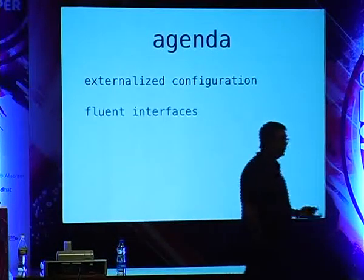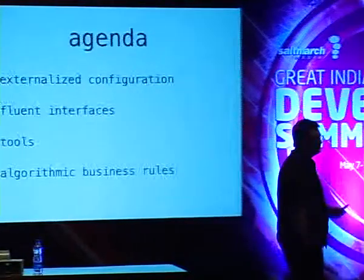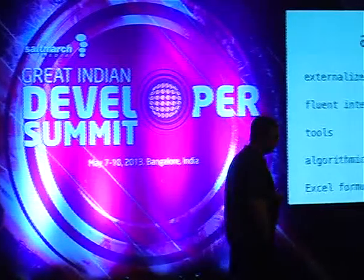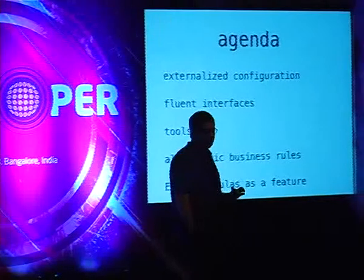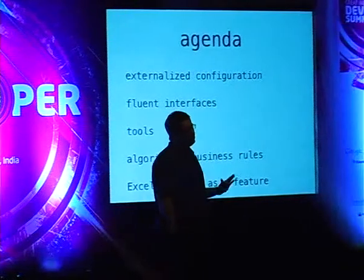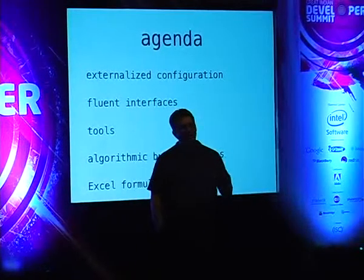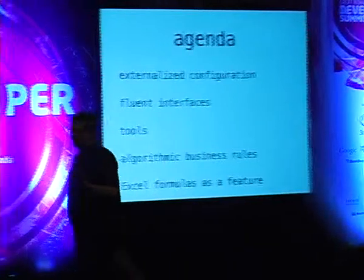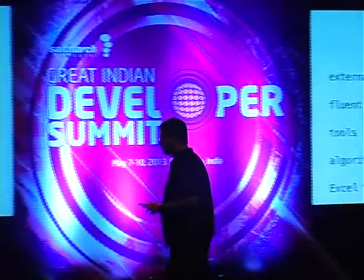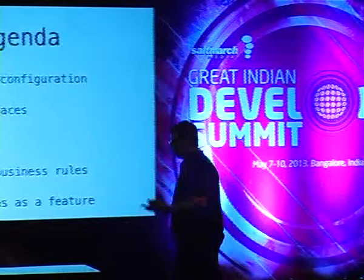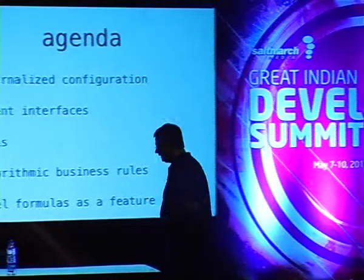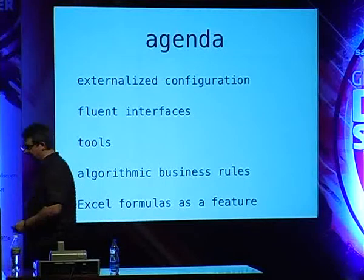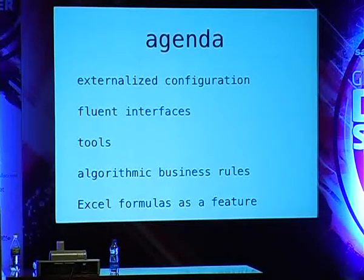These are the four practical uses: externalized configuration, building fluent interfaces, building smarter tools, and the ability to include algorithmic business rules — and creating kinds of user interfaces that are both extraordinarily difficult to create and ones that your users don't like very much. There's a much better alternative, and some remarkable innovation that's happened in this space over the last few years.